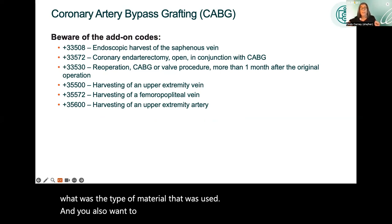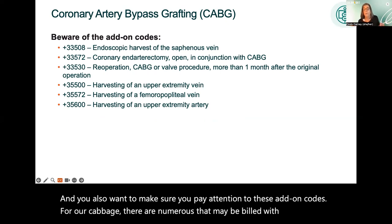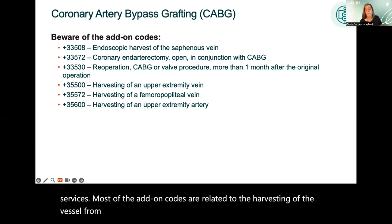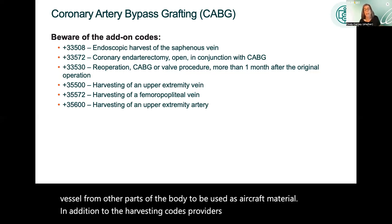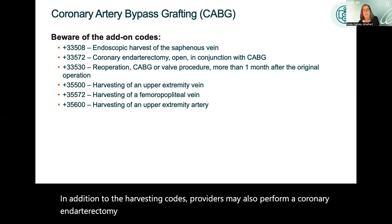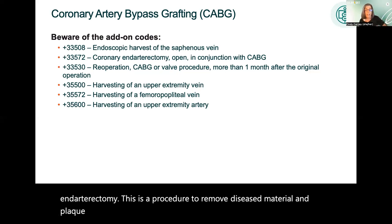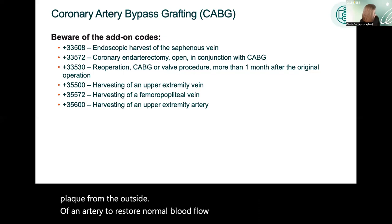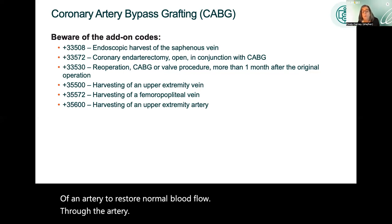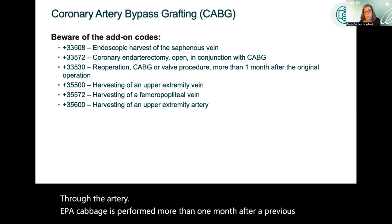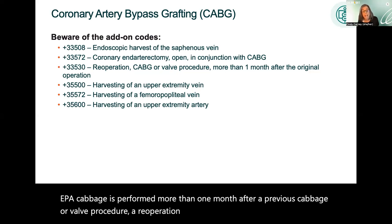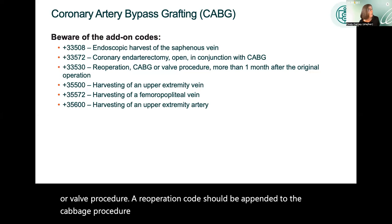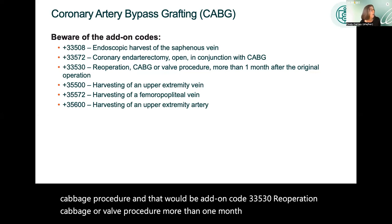Pay attention to add-on codes for CABG — there are numerous that may be billed with those services. Most add-on codes relate to harvesting of the vessel from other body parts to be used as graft material. Providers may also perform a coronary endarterectomy — a procedure to remove diseased material and plaque from the outside of an artery to restore normal blood flow. If a CABG is performed more than one month after a previous CABG or valve procedure, re-operation add-on code 33530 should be appended.